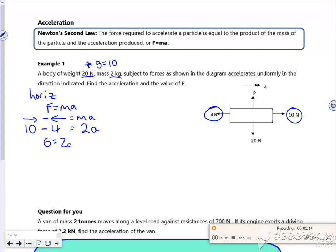So I've got 6 is 2A. So 3 metres per second squared is my acceleration. So that's not too bad, is it?